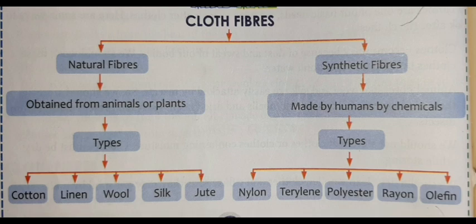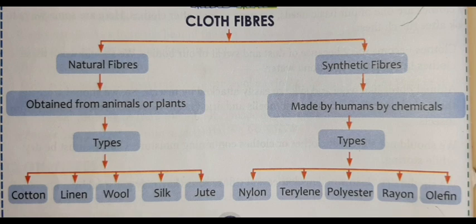There are two types of fibers: one is natural fiber and the other is synthetic fiber. Natural fibers are obtained from plants and animals, and synthetic fibers are man-made fibers. Examples of natural fibers are cotton, linen, wool, silk, and jute. Examples of synthetic fibers are nylon, polyester, rayon, and olefin.